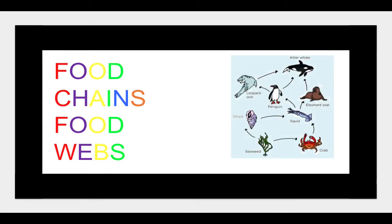So, food chains and food webs. Food chains in nature are not always so simple. When there are animals within a habitat that eat more than one thing, or are eaten by more than one thing, we can make a food web. This is what a food web looks like. Like a simple food chain, it all begins with a producer, which in this case is the seaweed. The squid, for example, preys on more than one thing — so whelks and crabs — but it's also preyed on by more than one thing, so penguins and elephant seals. The killer whale has no predators, so this is the top of the food web.